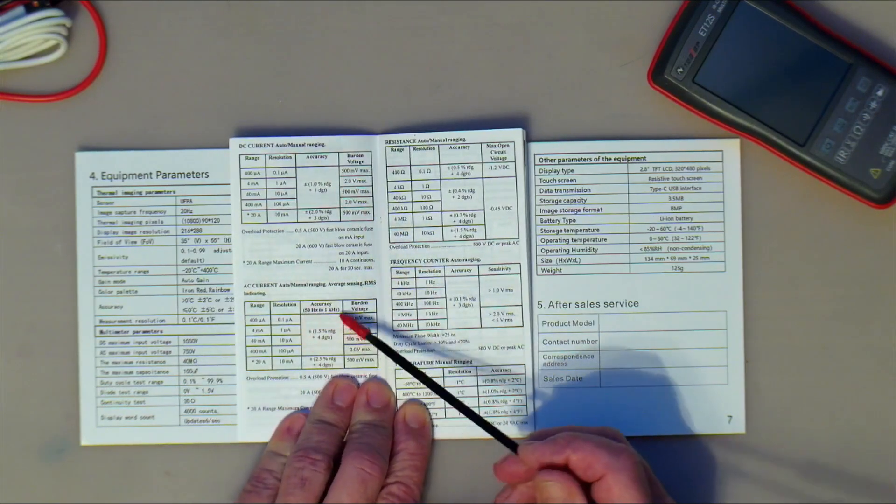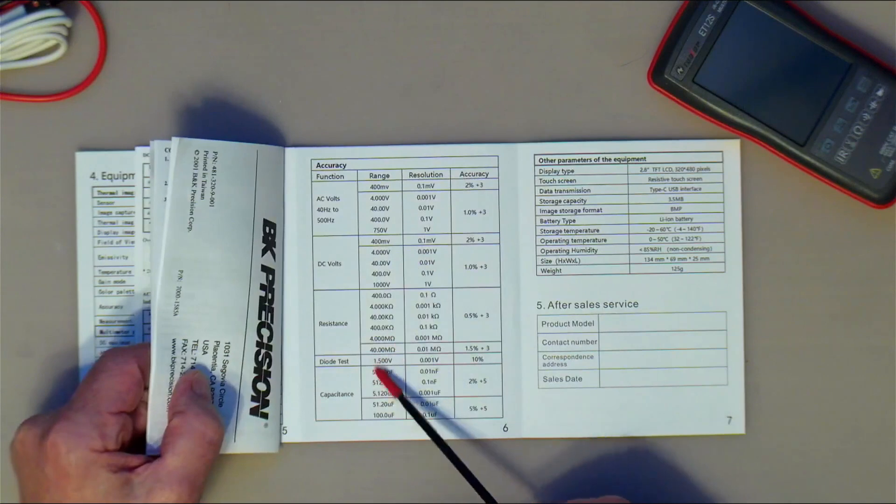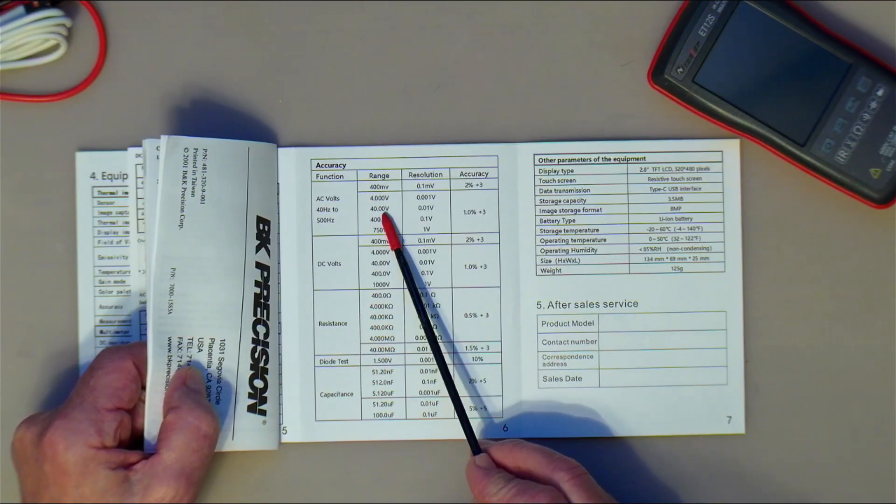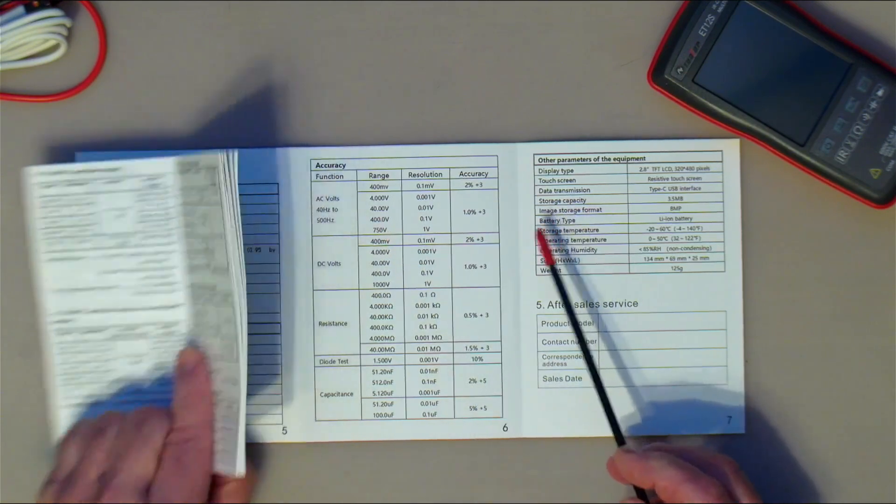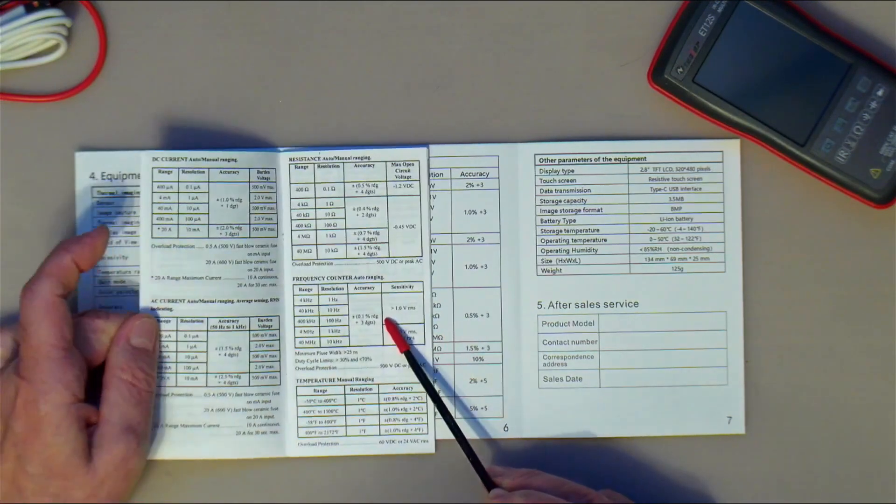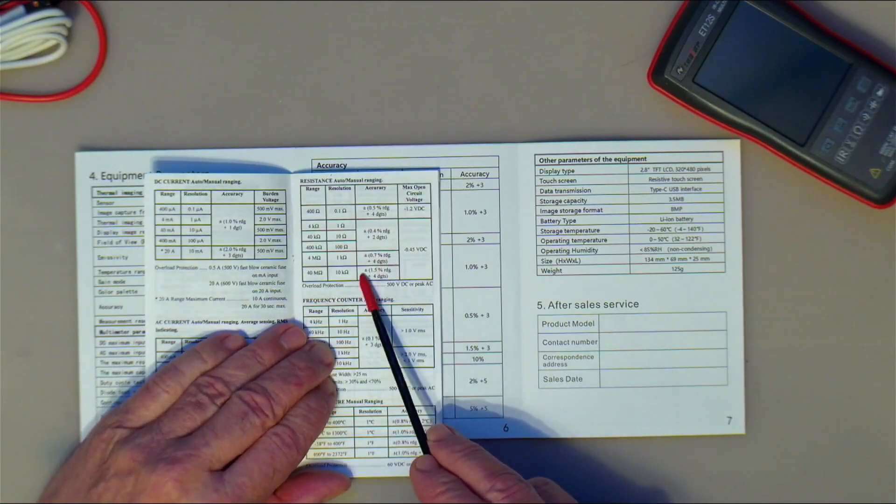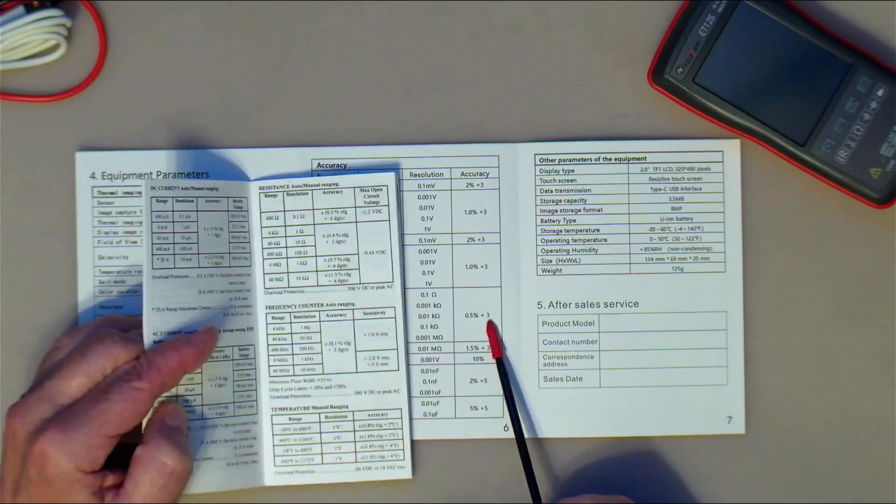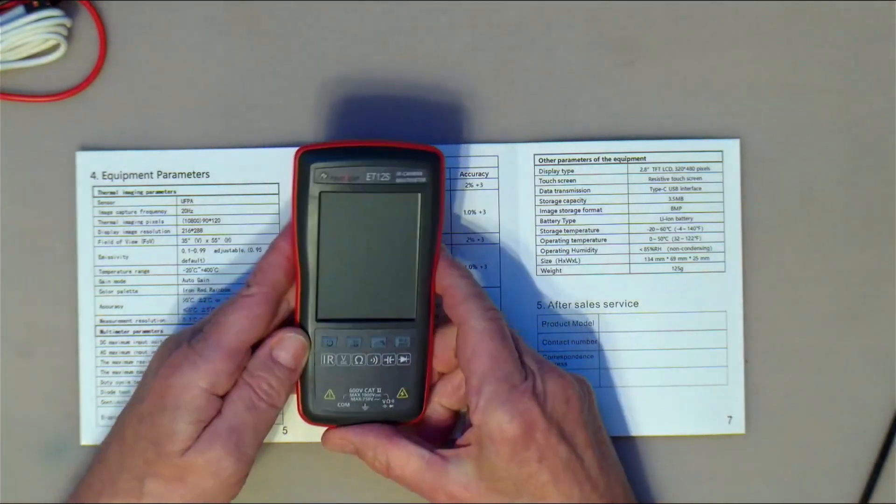But on DC current, it's one percent and here it doesn't even mention that. I don't even think it has a current range, does it? No, it doesn't. So that's again, as a multimeter, a shortcoming. Resistance here is 0.5 percent, 0.4 percent and going up to one and a half percent for the higher, which is actually similar to what this one is saying.